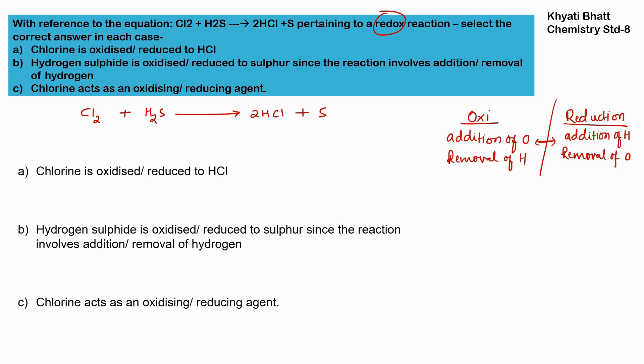We need to focus on hydrogen and oxygen when identifying oxidation or reduction. Here, hydrogen is present in H₂S, but on the product side hydrogen has been removed from sulfur. Since hydrogen is being removed from sulfur, this is a removal of hydrogen — so this is an oxidation reaction. The conversion from H₂S to sulfur is an oxidation reaction.